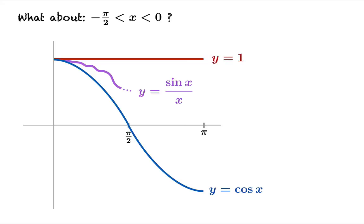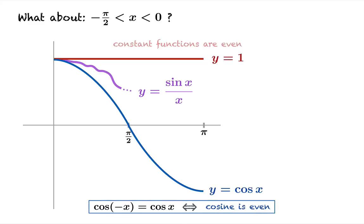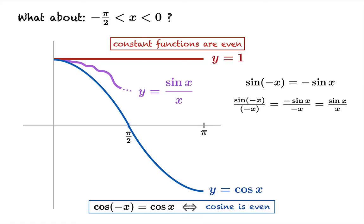So we're going to use some facts about even and odd functions. Cosine of negative x is cosine x. In other words, cosine is an even function. And of course, constant functions are even also. Sine x over x, what about it? Sine x itself is an odd function because sine of negative x is equal to negative sine x. And that means that sine x over x is actually even.